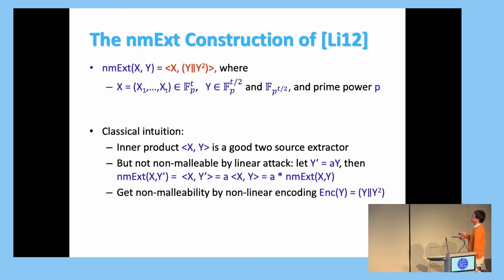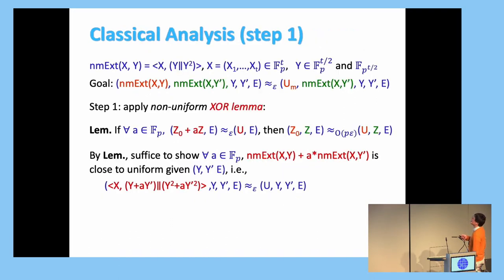So the classical intuition is this. We see inner product is a good two-source extractor, and we just see it is a non-malleable extractor. But obviously it's not. There is a really simple attack that's just Y' is a linear function of Y, Y' equal to AY. Then you calculate the extractor output against Y' and easily by linearity, it's just A times the output of Y. But we want this to be close to uniform conditioned on this, so obviously it's not true. But we say maybe it's just a linear function is bad, so we encode Y to something non-linear. Maybe this will be a non-malleable extractor, and that works.